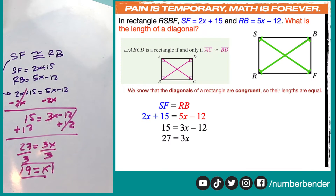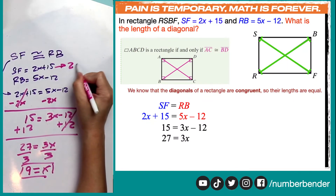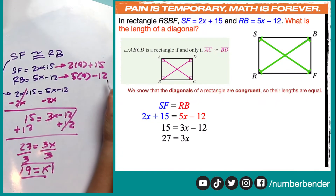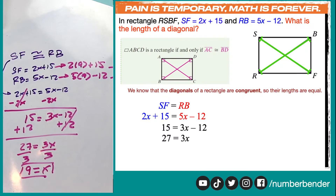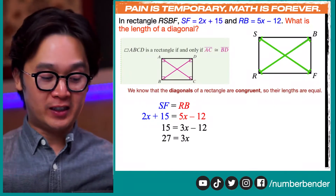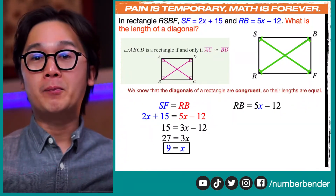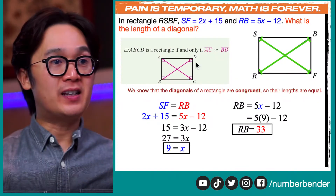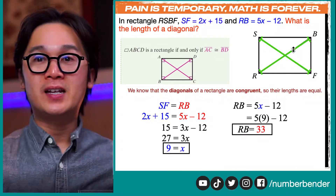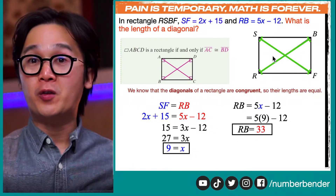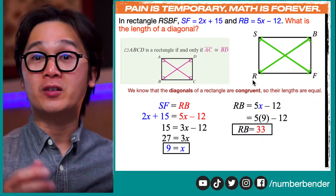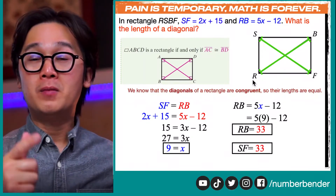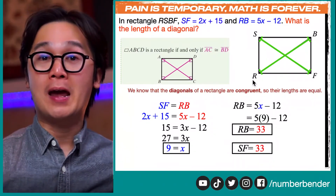Now we're ready to find the value of our diagonals. All we need to do is replace x by 9. So SF equals 2 times 9 plus 15, and RB equals 5 times 9 minus 12. RB is 5x minus 12, therefore 5 times 9 minus 12 is equal to 33. So RB, this diagonal, is equal to 33 units. And since we know that RB is congruent to SF, SF should also be 33 units. So now we know the length of our diagonals and we've solved problem two using the theorem about rectangles.